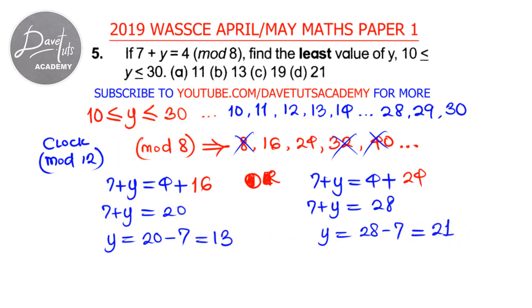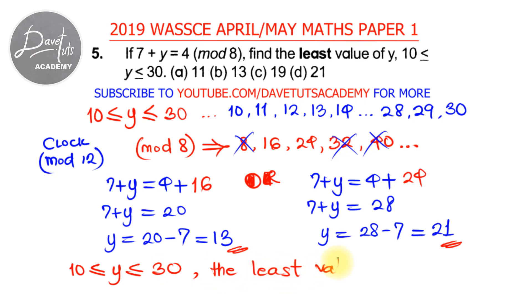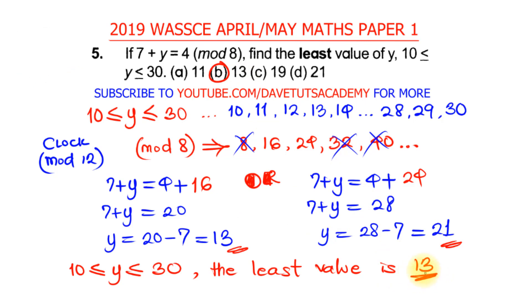Now our condition kicks in: y must be between 10 and 30. Looking at 13 — yes, 13 is between 10 and 30. Looking at 21 — it's also within that range. But we are looking for the least value, and the least value between 13 and 21 is 13. So the least value is 13, and looking at our options, the answer is option B: 13, which satisfies 7 plus y equals 4 under modulo 8.